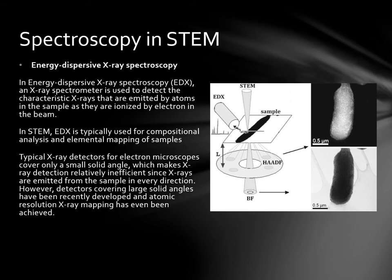Then we have energy dispersive x-ray spectroscopy. An x-ray spectrometer is used to detect the characteristic x-rays that are emitted by atoms in the sample as they are ionised by electrons in the beam. In STEM, EDX is typically used for compositional analysis and elemental mapping of samples. Typical x-ray detectors for electron microscopes cover only a small solid angle, which makes x-ray detection relatively inefficient since x-rays are emitted from the sample in every direction. However, detectors covering large solid angles have been recently developed and atomic resolution x-ray mapping has been achieved.